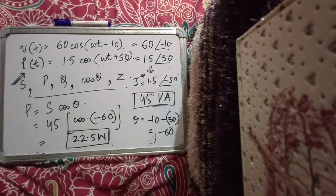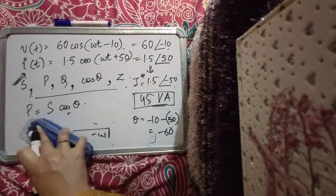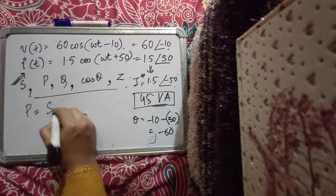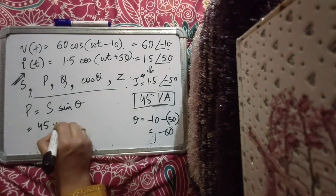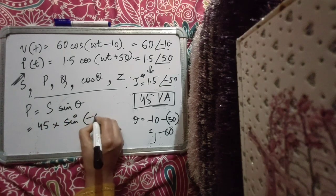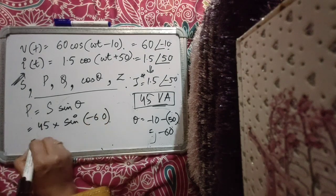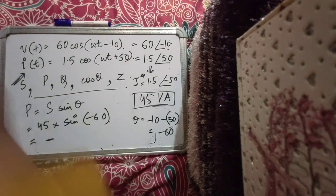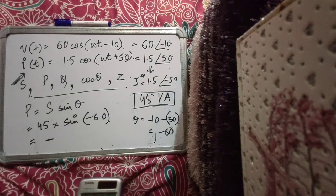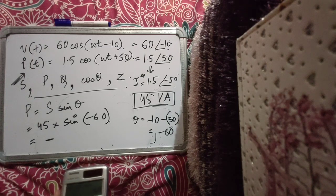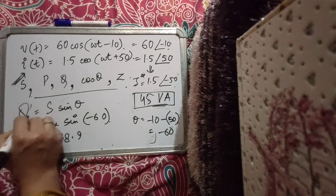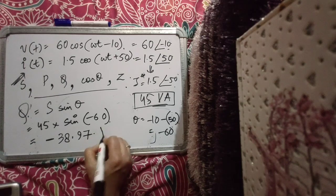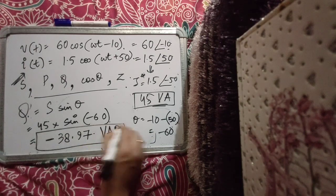Reactive power Q = S·sin θ = 45·sin(−60°) = −38.97 VAR. This is the reactive power. The negative sign is significant — it tells us the circuit is capacitive, also described as leading VARs. If Q were positive it would indicate lagging VARs, meaning the circuit is inductive.